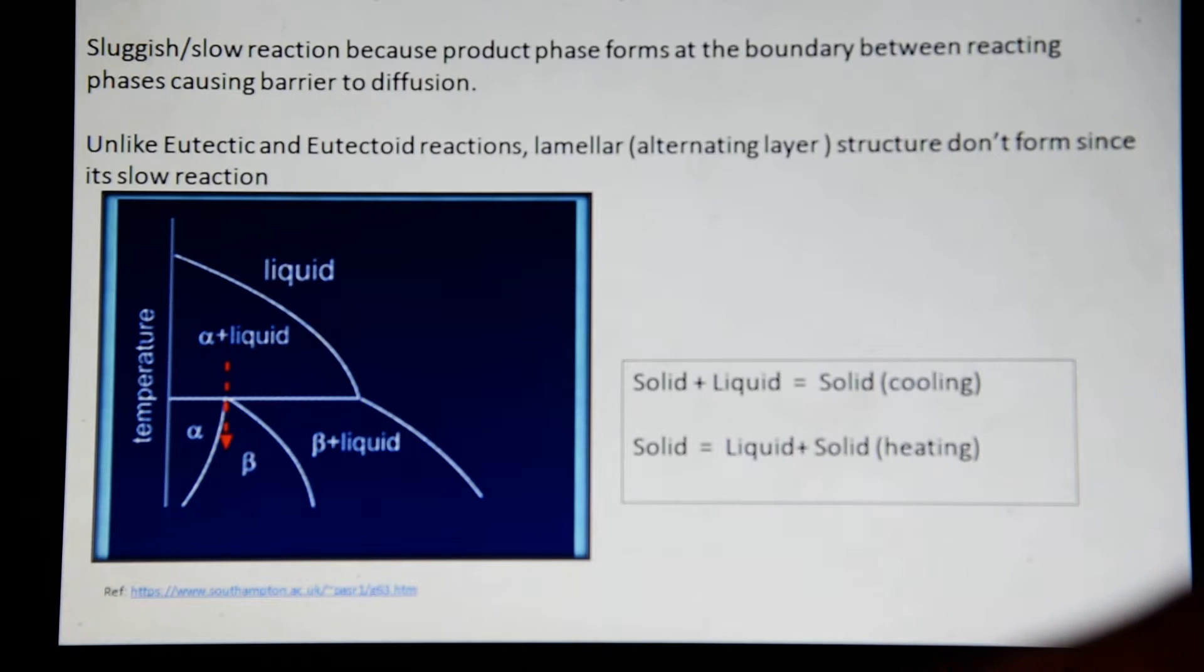And because you have the new phase, or the solid phase, it serves as a boundary between the reacting phases. So it's then much slower to convert from one solid phase plus liquid into a beta phase.